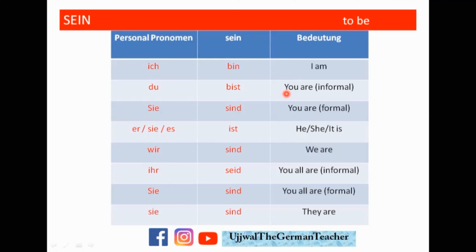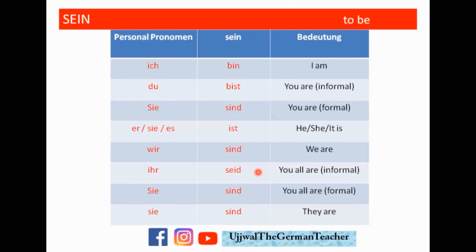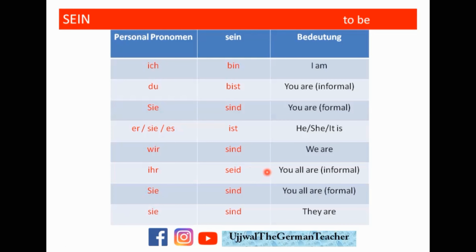Du bist — you are. So for 'you are' you have two answers: Du bist, or Sie sind. One is informal, the other one is formal. Er ist — he is. Just be careful: for the ihr case, it's seid. If you know about verb conjugations, for those cases we add -t. But if you add t here, seit — s-e-i-t — that is a preposition that means 'since'. So do not do that. Learn the conjugations as they are, because this is a special case. Sein is irregular — you cannot see 'sein' in the verb conjugations; it's sind, sind, sind.